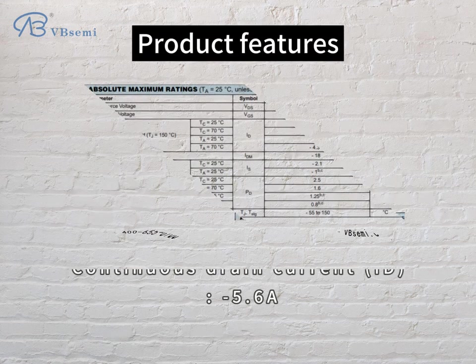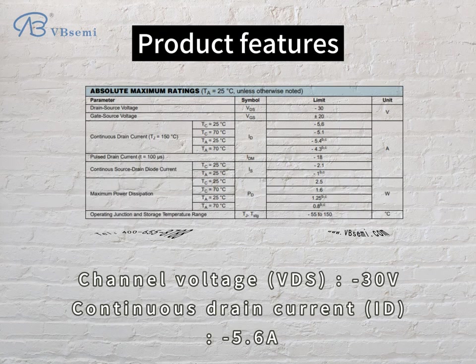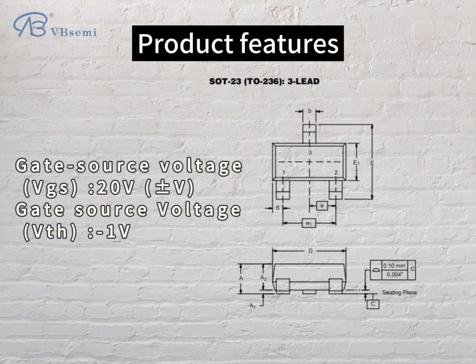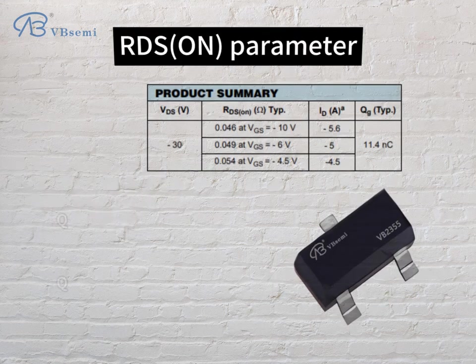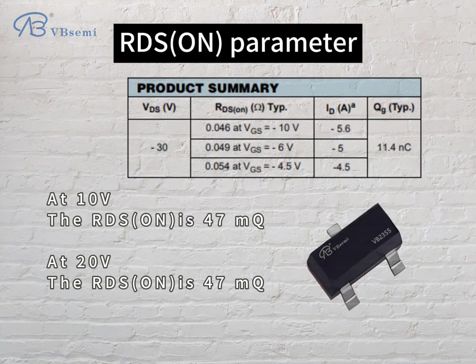Product features: Channel voltage VDS -30V, Continuous drain current ID 5.6A, Gate-source voltage VGS -20V, Gate-source threshold voltage VTH -1V. RDS(on) parameter: at 10V the RDS(on) is 47mΩ; at 20V the RDS(on) is 47mΩ.